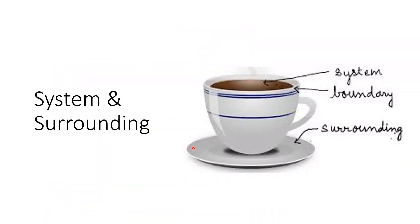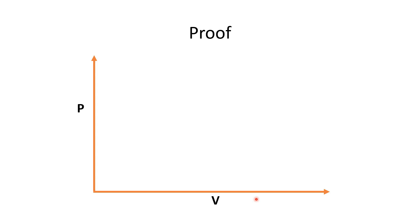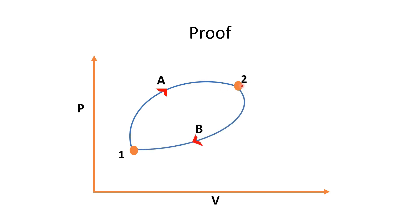A figure is shown here to understand system and surroundings. We have a cup with tea inside. Since we are observing the tea, the tea is our system; the cup itself is the system boundary, and the rest of the universe excluding the tea is the surroundings. For the proof of the first law, we use a pressure-volume coordinate system and consider changing state from point 1 to point 2 via path A, then returning via path B.